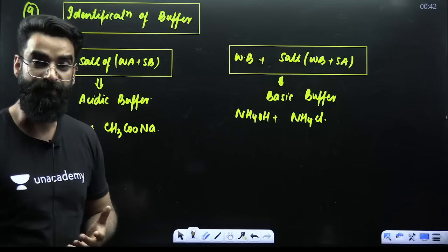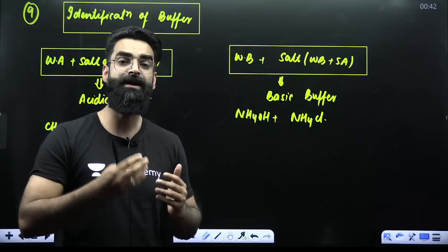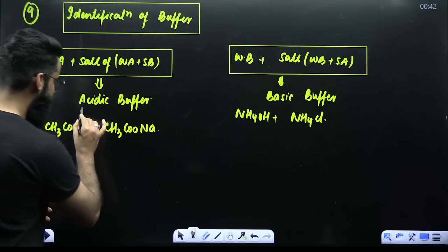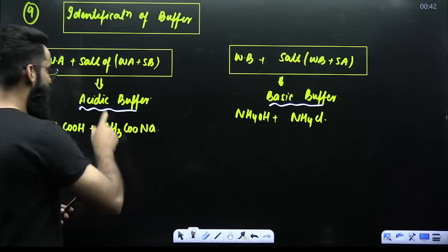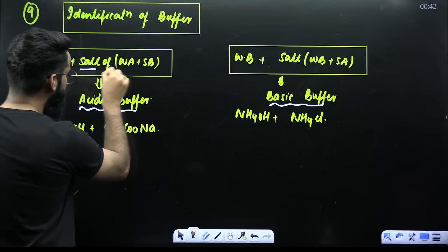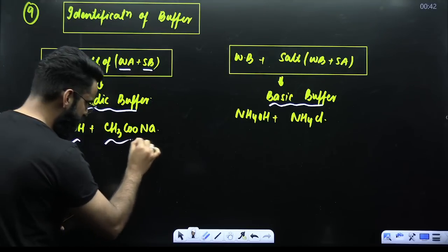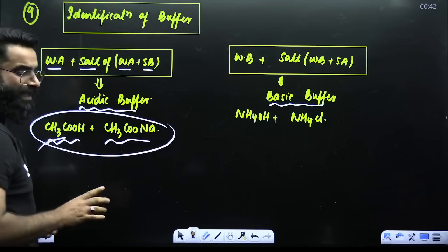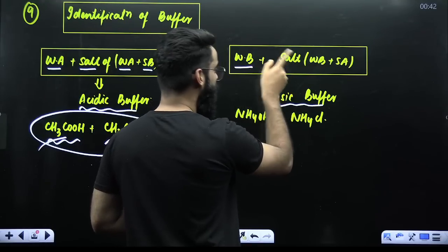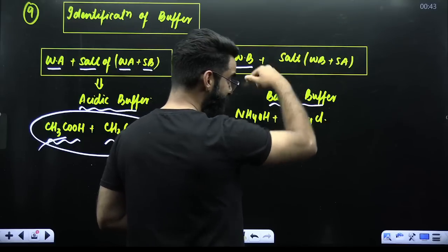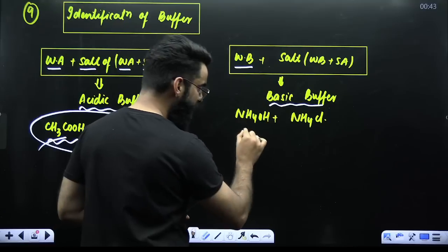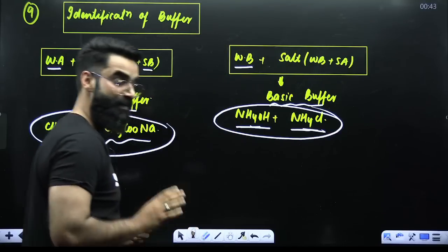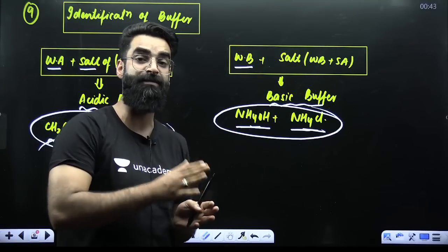Next concept: identification of buffers. You'll be asked which solution forms an acidic buffer or basic buffer. An acidic buffer is formed when you have a weak acid and the salt of the same weak acid with a strong base — for example, acetic acid and sodium acetate. A basic buffer is formed when you have a weak base and the salt of the same weak base with a strong acid — for example, ammonia and ammonium chloride (NH₄Cl formed with HCl).